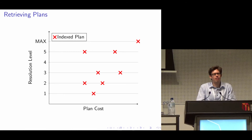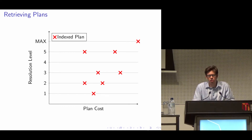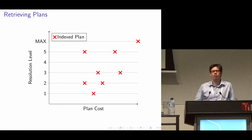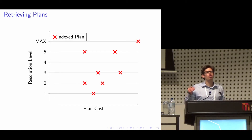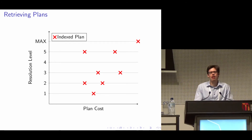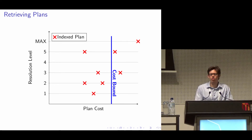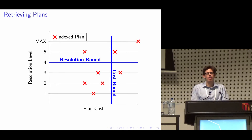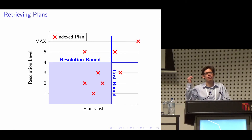We want to retrieve candidate plans efficiently, so we index plans in a multi-dimensional index structure. Each plan is indexed by its plan cost — in general, we can have multiple cost metrics. Additionally, plans are indexed by the resolution level for which they could be relevant: a plan indexed for resolution level 2 means it could be relevant for resolution level 2 or higher. When retrieving candidate plans during an optimizer invocation, we exploit the current cost bounds and resolution bounds so that plan retrieval corresponds to a range query within that multi-dimensional index structure, and only the relevant plans are returned.